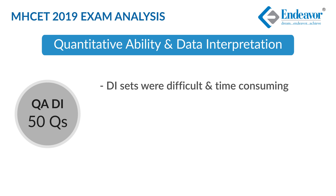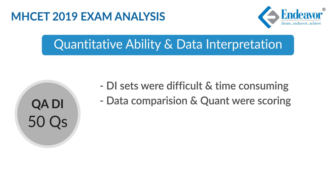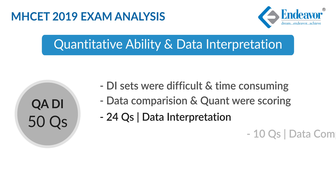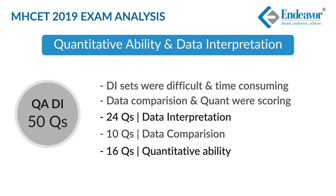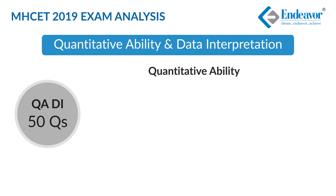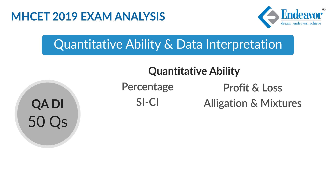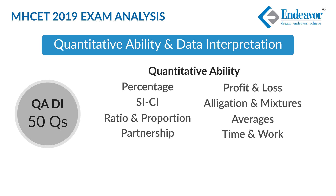The next section is Quantitative Aptitude and Data Interpretation. The section was relatively difficult and time-consuming as far as DI sets were concerned, but scoring in DI comparison and quant. There were 24 questions of DI, 10 data comparison questions, and 16 independent quant questions. Out of these 16, 6 number series questions made question selection easy. The quant section had a good mix from all topics including percentage, profit and loss, SI/CI, allegation mixtures, ratio and proportion, averages, partnership, time and work, TST, probability, etc.